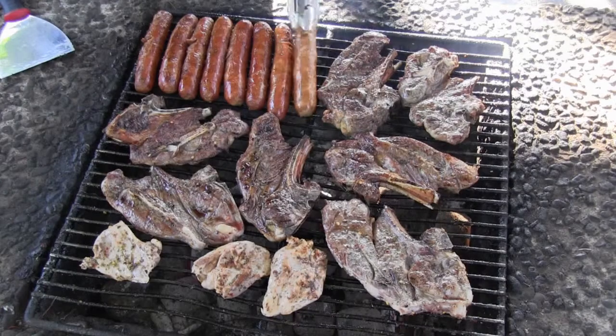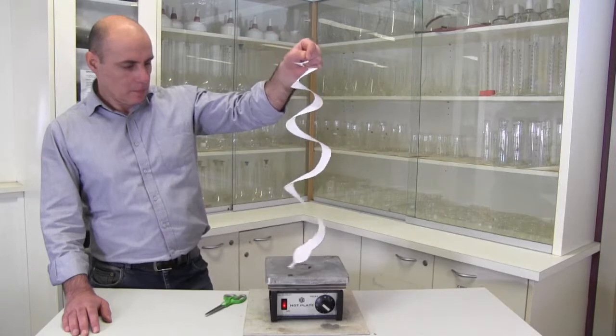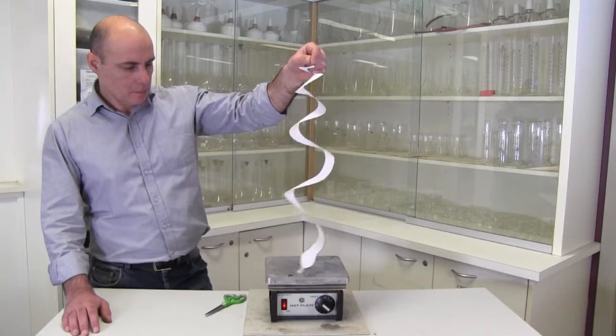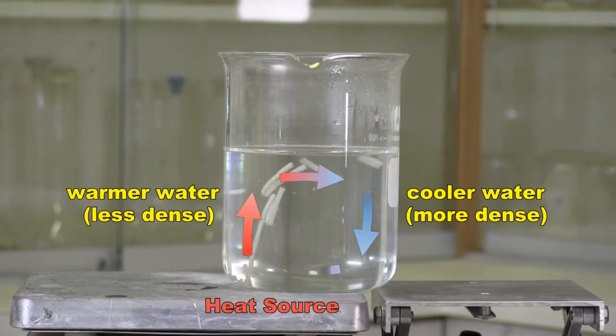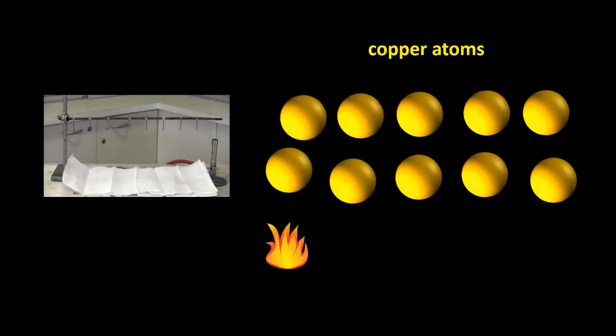In Episode 5, Heat Transfer, we look at the three ways that heat energy can transfer from one thing to another: conduction, convection, and radiation.